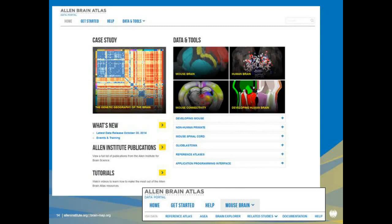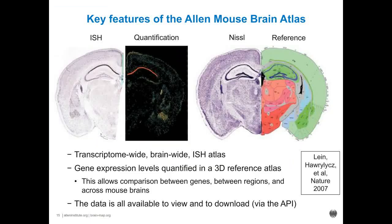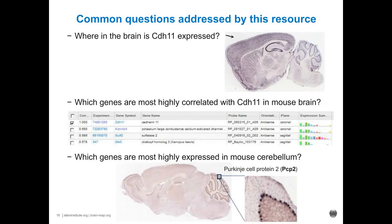The next atlas is the mouse brain atlas. Data from this atlas can also be downloaded from the application programming interface. Some key features of this mouse brain atlas: it's a genome-wide, brain-wide, in situ hybridization atlas of the adult mouse brain. About 30,000 genes were run — almost all in sagittal section and about 4,000 in coronal section. Each was quantified and mapped onto a 3D reference atlas, which allows comparison between genes, between regions, and across different mouse brains. All of this data is available for download online.